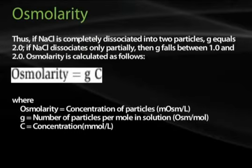Thus, if sodium chloride is completely dissociated into two particles, G equals 2.0. If sodium chloride dissociates only partially, then G falls between 1.0 and 2.0. Osmolarity is calculated as follows: osmolarity equals G times the concentration, which is typically expressed in millimoles per liter.